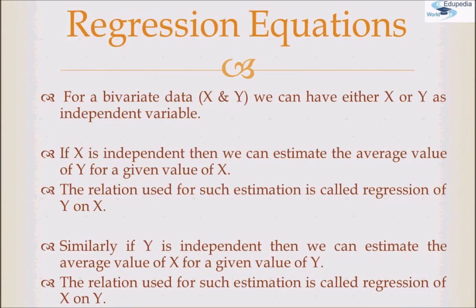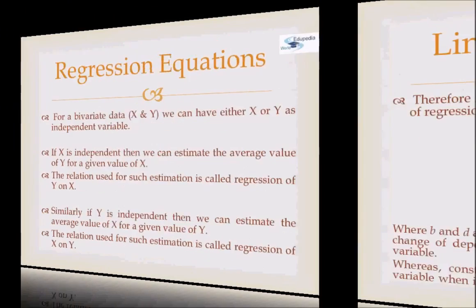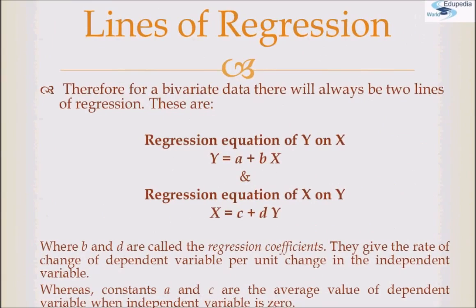So we have two equations depending on which variable is independent and which is dependent. We have a regression equation for y dependent on x, and a regression equation for x dependent on y. When y is dependent on x, the equation is y = a + bx. When x is dependent on y, the equation is x = c + dy.